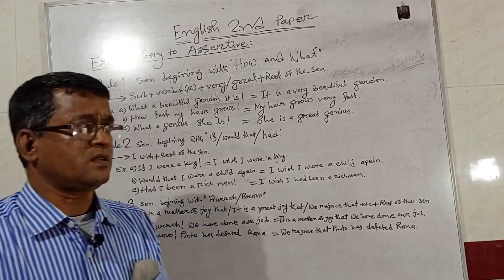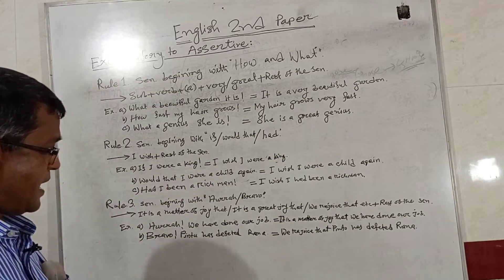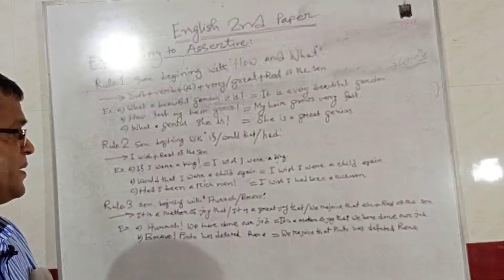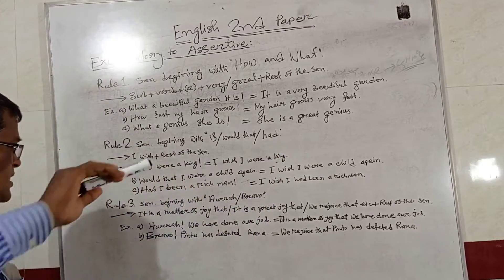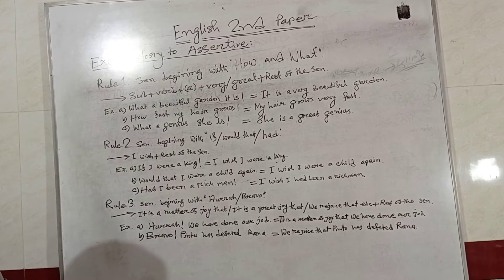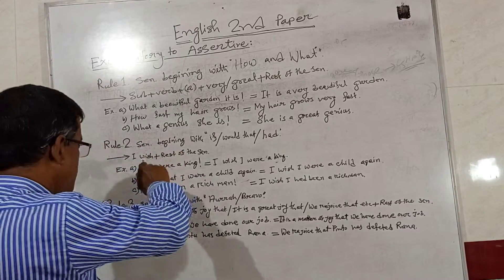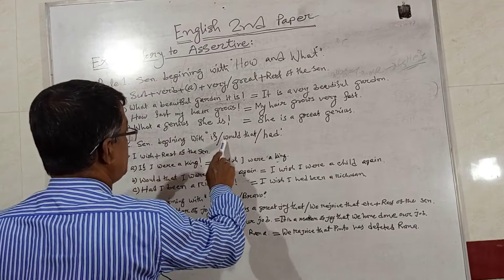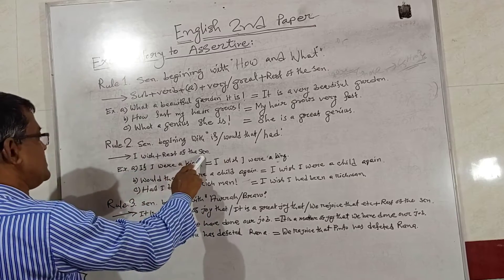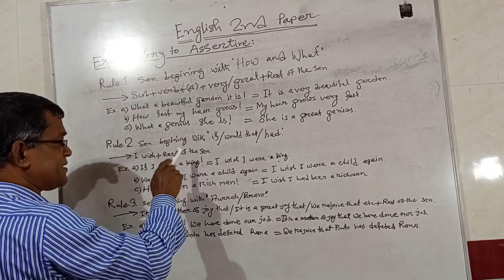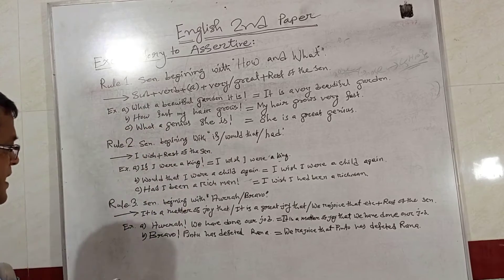Rule number two: sentences beginning with 'If,' 'Would that,' or 'Had.' If any sentence begins with 'If,' 'Would that,' or 'Had,' the structure will be Assertive. First, we will use 'I wish' in place of 'If,' 'Would that,' or 'Had' at the beginning of the sentence, and we will omit 'If,' 'Would that,' or 'Had.' Then we write the rest of the sentence. This rule is far simpler than the first one.